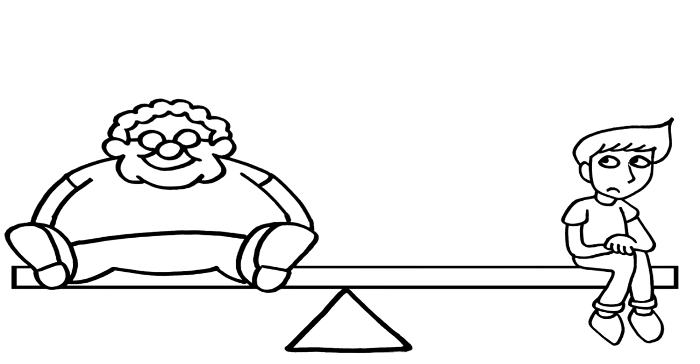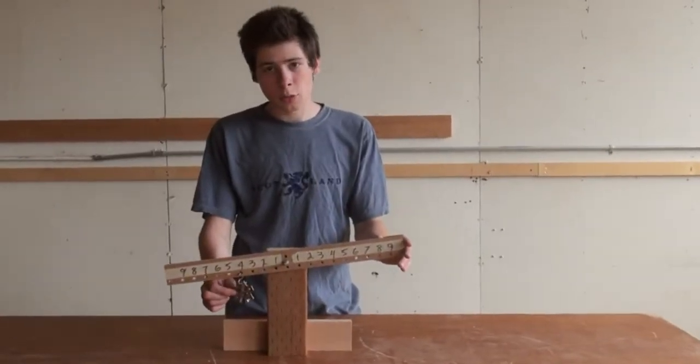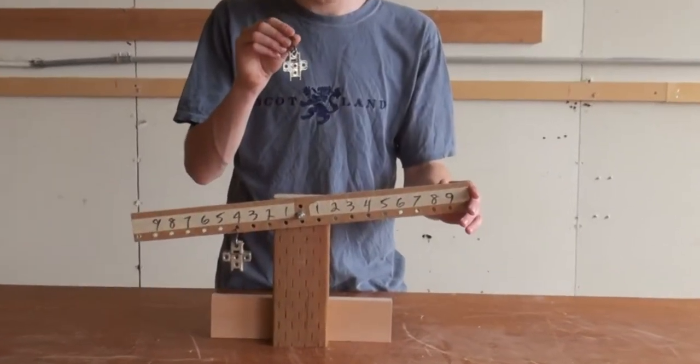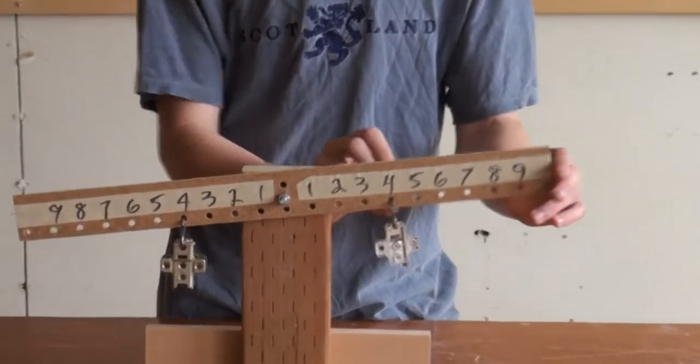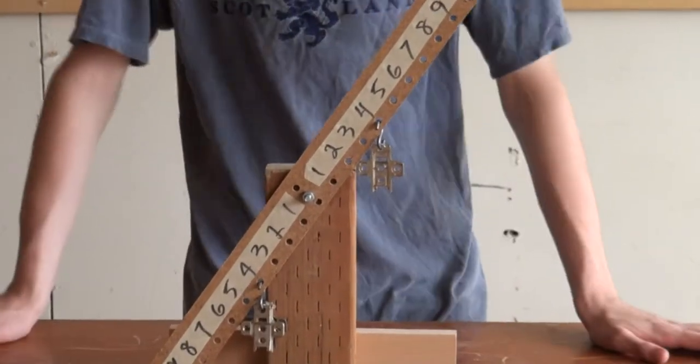If the weights are not equal, then you see what's going to happen. These two clips represent 200 pounds. We have to balance 100 pounds. Obviously it doesn't work.